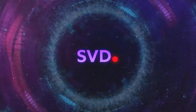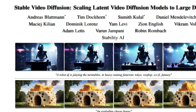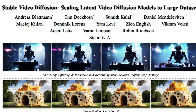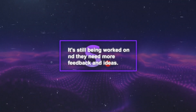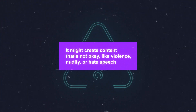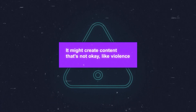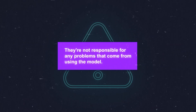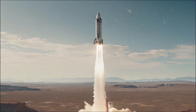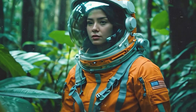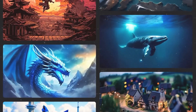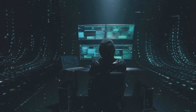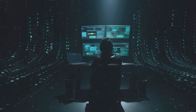Even SVD isn't without flaws. Right now, it's only for research and isn't ready for real-world or business use. Stability AI says it's still being worked on and they need more feedback and ideas. They also caution that it might create content that's not okay, like violence, nudity, or hate speech, and they're not responsible for any problems that come from using the model. It might struggle with very complex or abstract videos and could show bias or unfairness, creating videos with stereotypes or negative views about certain people or topics, which could lead to problems like damaging reputations or spreading false information.